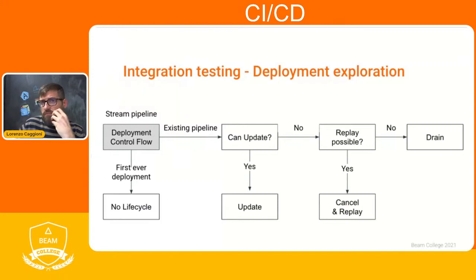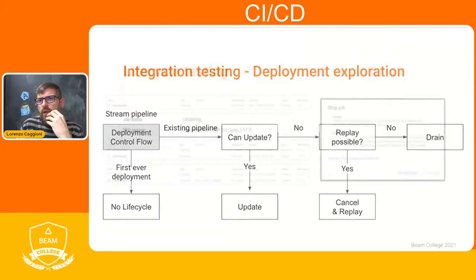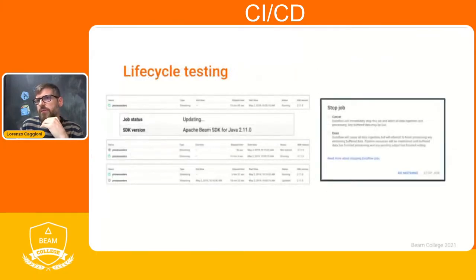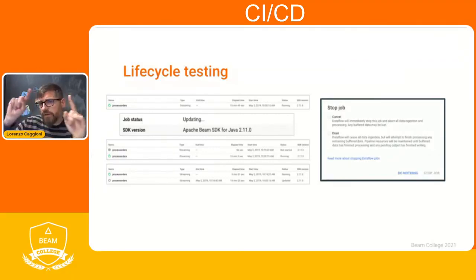For streaming pipelines we have different options. If it's the first run, just deploy it. Otherwise, if you can apply an Update, try to update your pipeline. If that's not an option, you can cancel or drain. It's always good practice to get familiar with all three options, because maybe your first option is to update your pipeline but for some reason you end up needing to cancel or drain it. Be familiar with what happens in all scenarios so you are prepared and know how your entire system behaves when you do a drain or cancel.